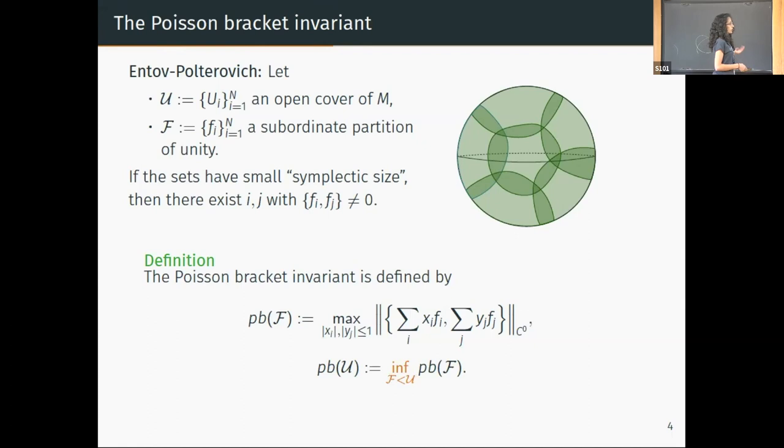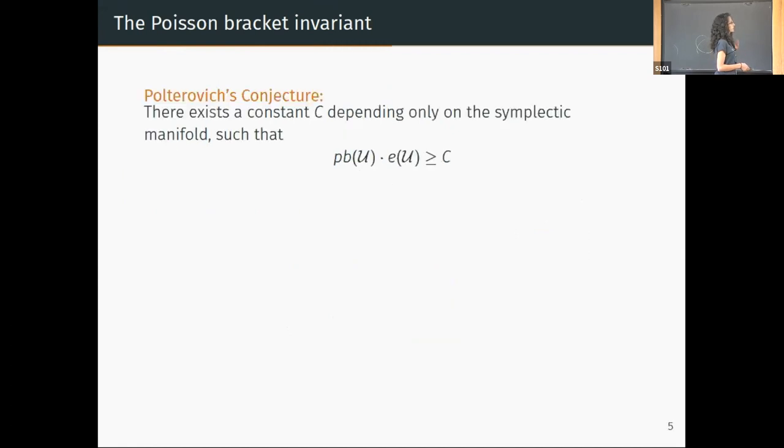Polterovich also conjectured a lower bound for this invariant. The conjecture states that there exists a constant depending only on the symplectic manifold—emphasis here: this constant does not depend on the open cover—such that the product of the Poisson bracket invariant and the symplectic size of the sets is bounded from below by this constant. This inequality is interpreted as an uncertainty principle: if the cover is very localized by very small sets, then the Poisson bracket, which represents noise, should be very large.